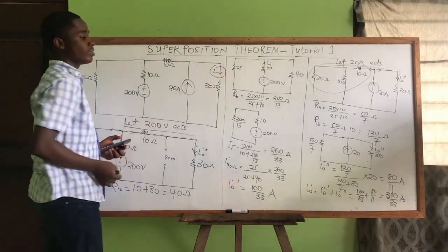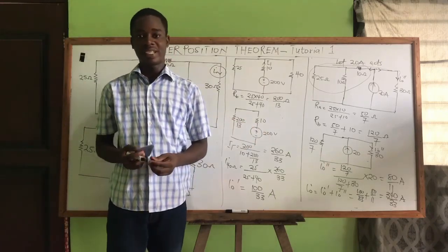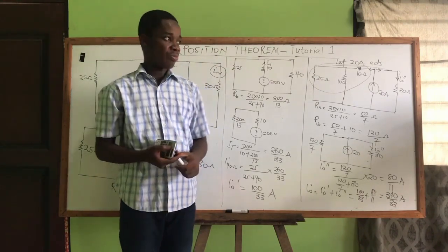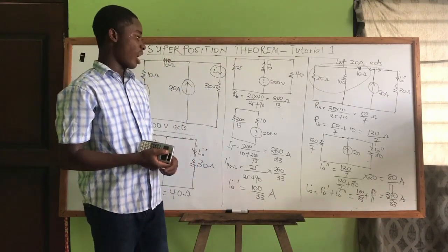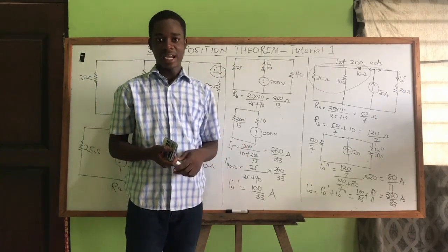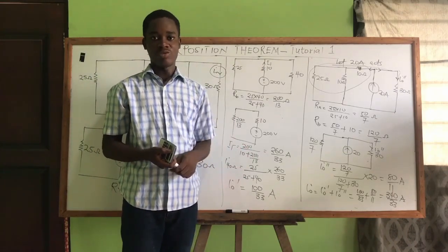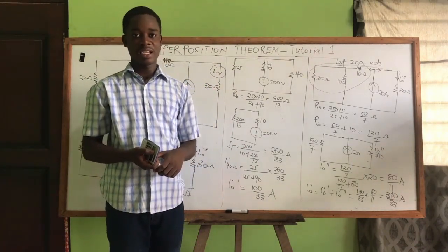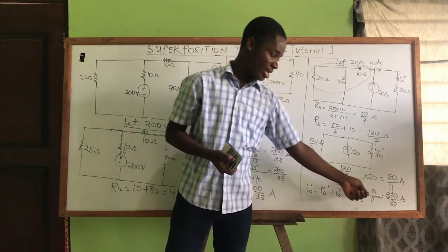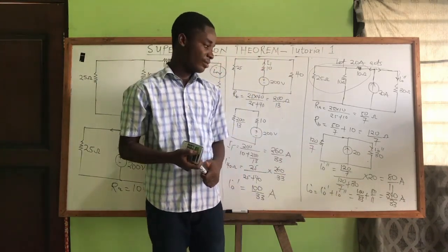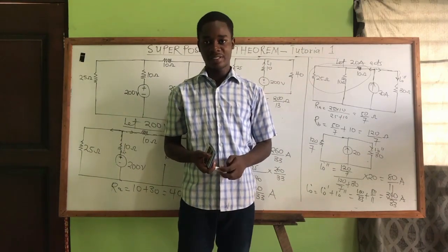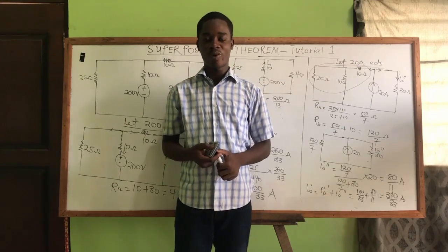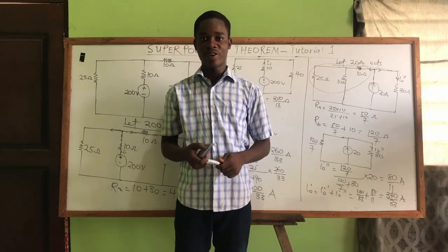The current flowing through the 30 ohm resistor, i₀, equals 340/33 amperes using the superposition theory, which is approximately 10.30 A. It is recommended that you also verify this using the mesh current method and node voltage method — you should get the same answer. That is the end of today's video; in our next video we'll be solving more questions using the superposition theory.